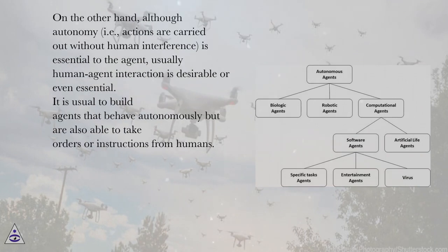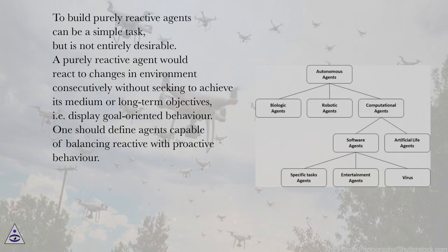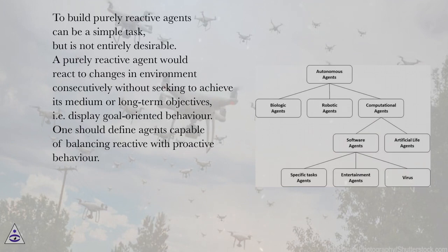On the other hand, although autonomy — i.e., actions are carried out without human interference — is essential to the agent, usually human-agent interaction is desirable or even essential. It is usual to build agents that behave autonomously but are also able to take orders or instructions from humans. To build purely reactive agents can be a simple task, but is not entirely desirable. A purely reactive agent would react to changes in the environment consecutively without seeking to achieve its medium or long-term objectives, i.e., display goal-oriented behavior.